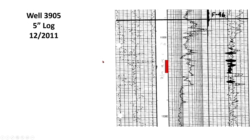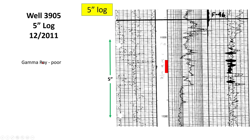Here's the 5-inch log on the subject well with the perforations marked in red. It is a detailed 5-inch log — on the paper copy of the log, it takes 5 inches to cover 100 feet of depth. We have a gamma ray here; it doesn't have a lot of good contrast, kind of poor. We have resistivity curves here, and then we have the porosity curves. For the volumetrics, we need to estimate how thick this reservoir is.